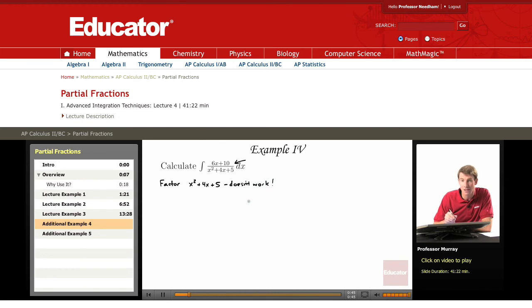So even though this looks like a partial fractions problem, it turns out that we're stuck at the quadratic level. We cannot factor x squared plus 4x plus 5 down into linear terms. So what do we do instead?